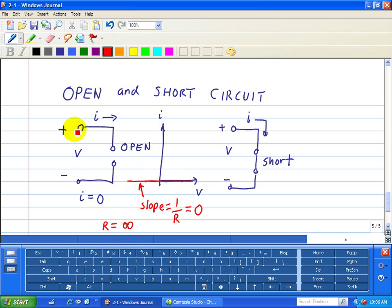You see, no matter what voltage I apply here, there's no way that the current can go through this device, which implies that the resistance is infinity, which also implies that the current is equal to zero.